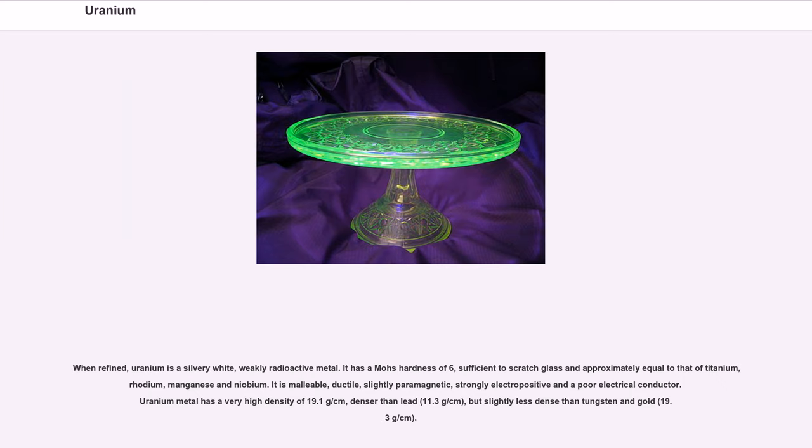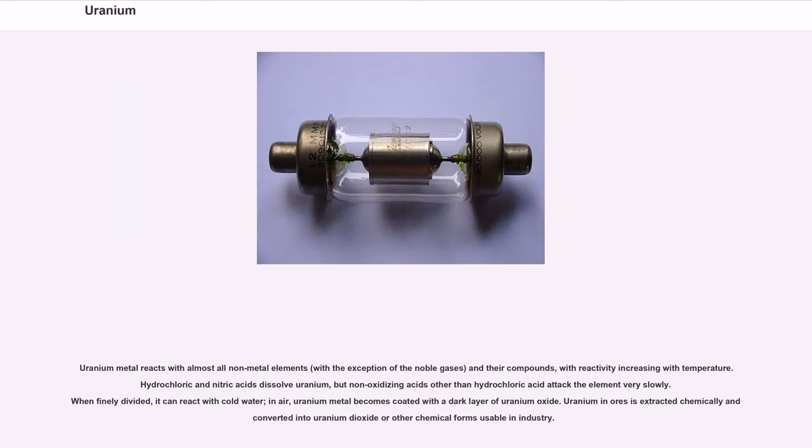Uranium metal has a very high density of 19.1 grams per cubic centimeter, denser than lead but slightly less dense than tungsten and gold. Uranium metal reacts with almost all non-metal elements, with reactivity increasing with temperature. Hydrochloric and nitric acids dissolve uranium. When finely divided, it can react with cold water. In air, uranium metal becomes coated with a dark layer of uranium oxide.